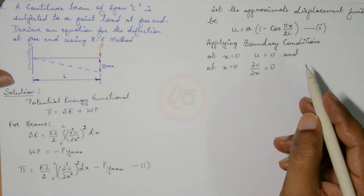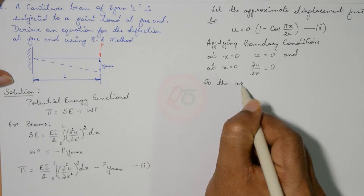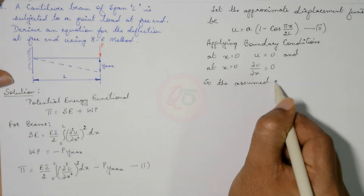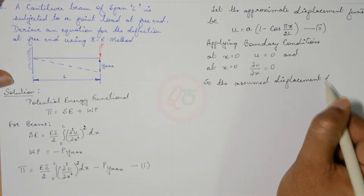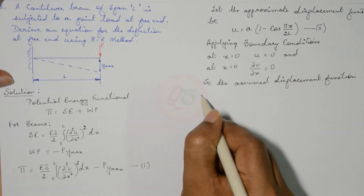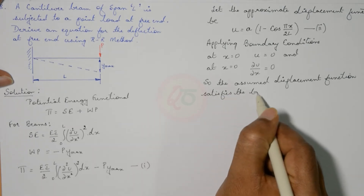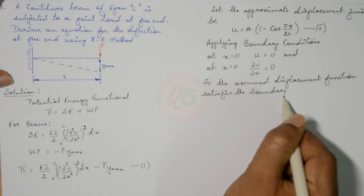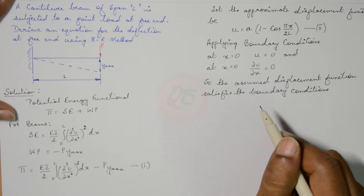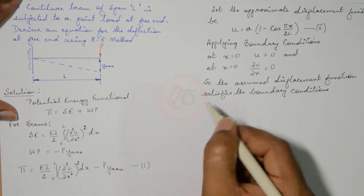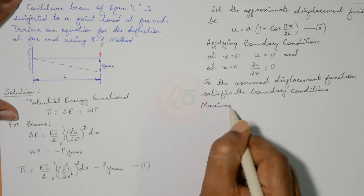So the assumed displacement function satisfies the boundary conditions. Now, maximum displacement occurs at the free end of the beam.